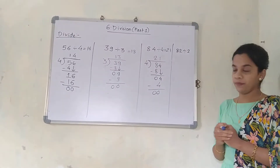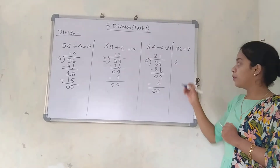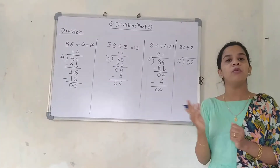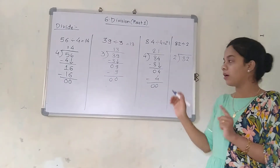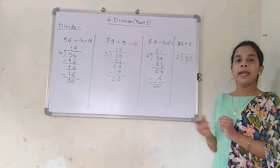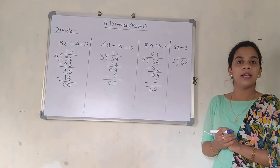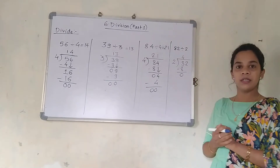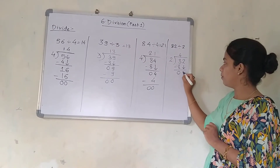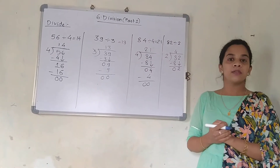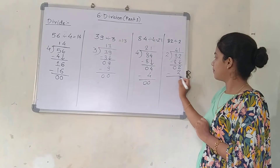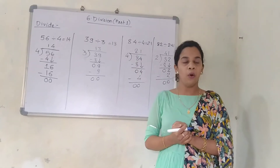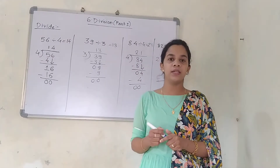The next question is 82 divided by 2. I am going to write 2 here and 82 here. 2 tens are 20, and 82 is bigger than that. So again we take the first number. 2 fours are 8. 0 is remaining here. Now we take this 2 down. 2 ones are 2. So the answer is 41. I hope you have understood this question. Now we will see the next part of this lesson.